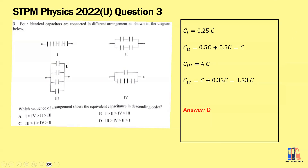The descending order is: 4C to 1.33C to 1C and to 0.25C.